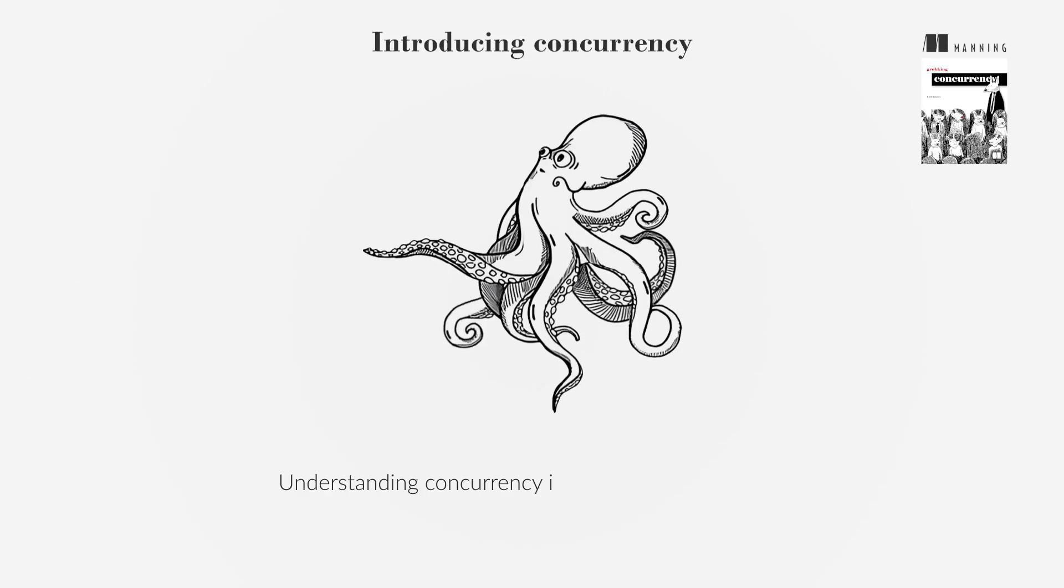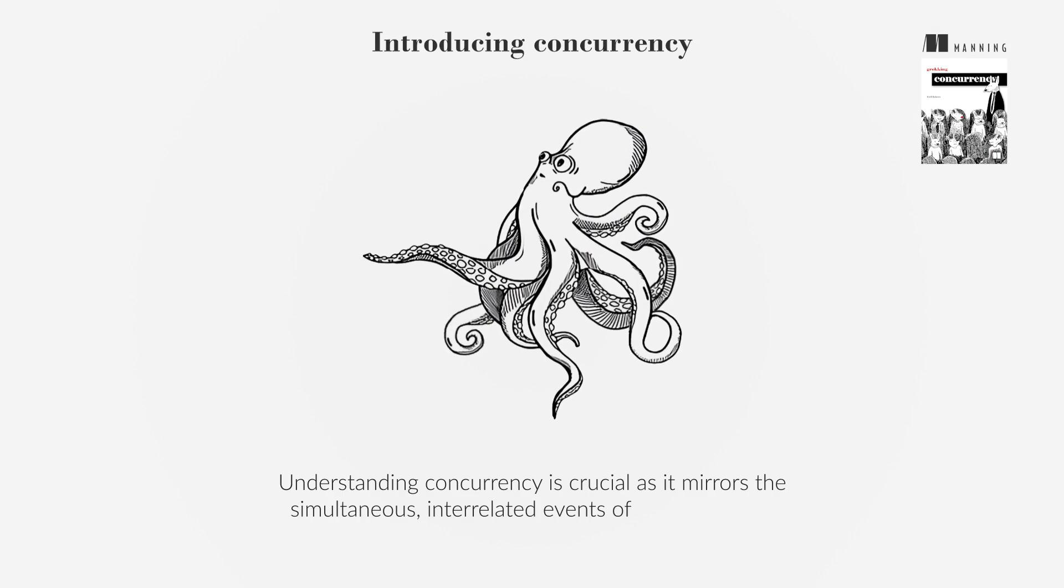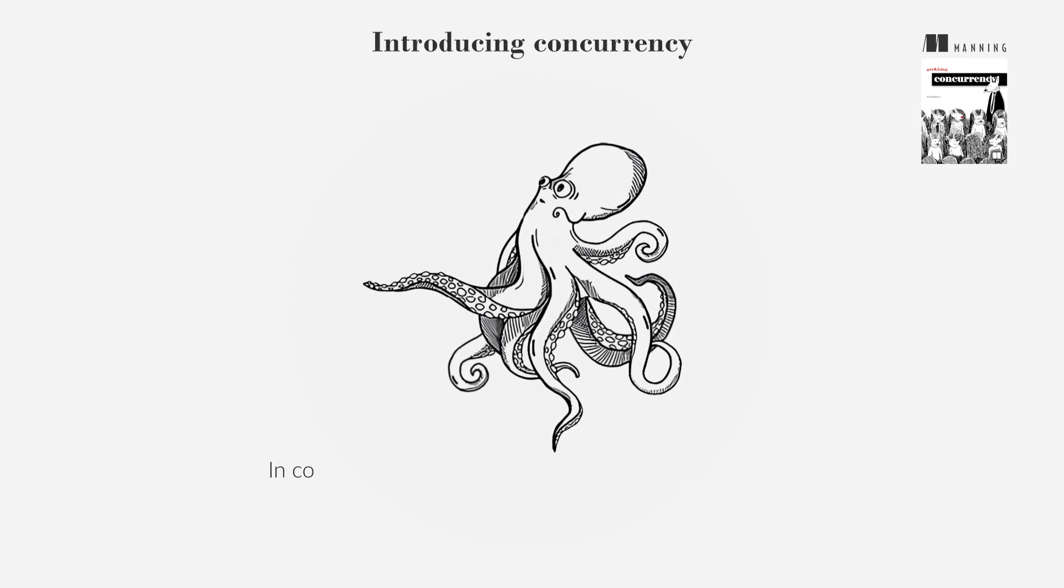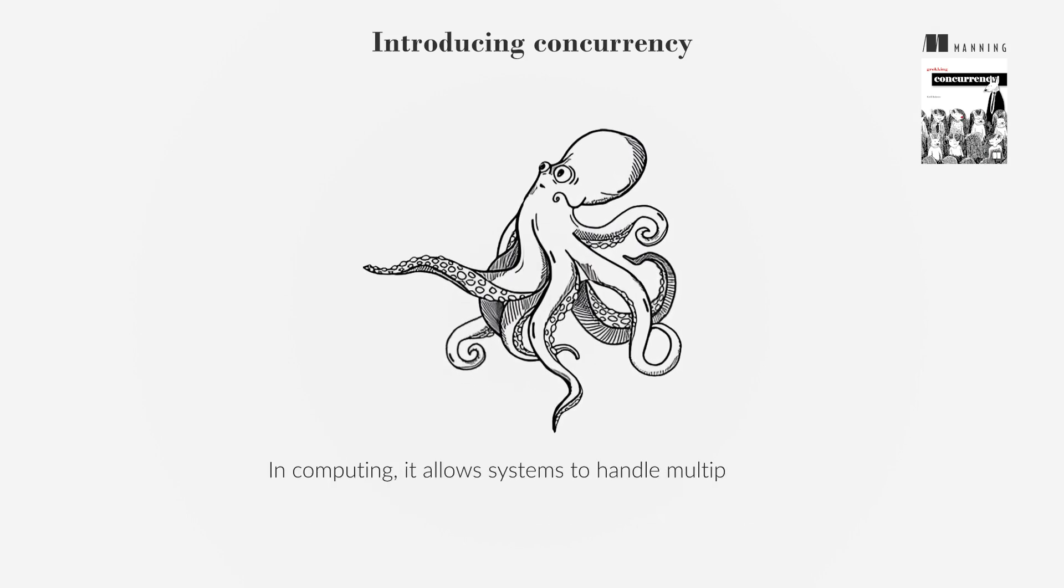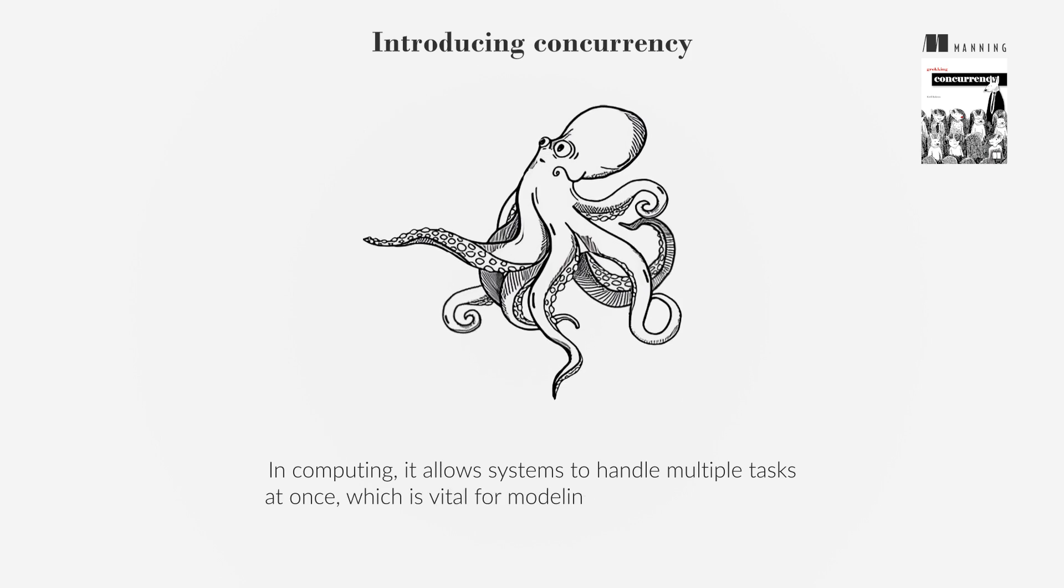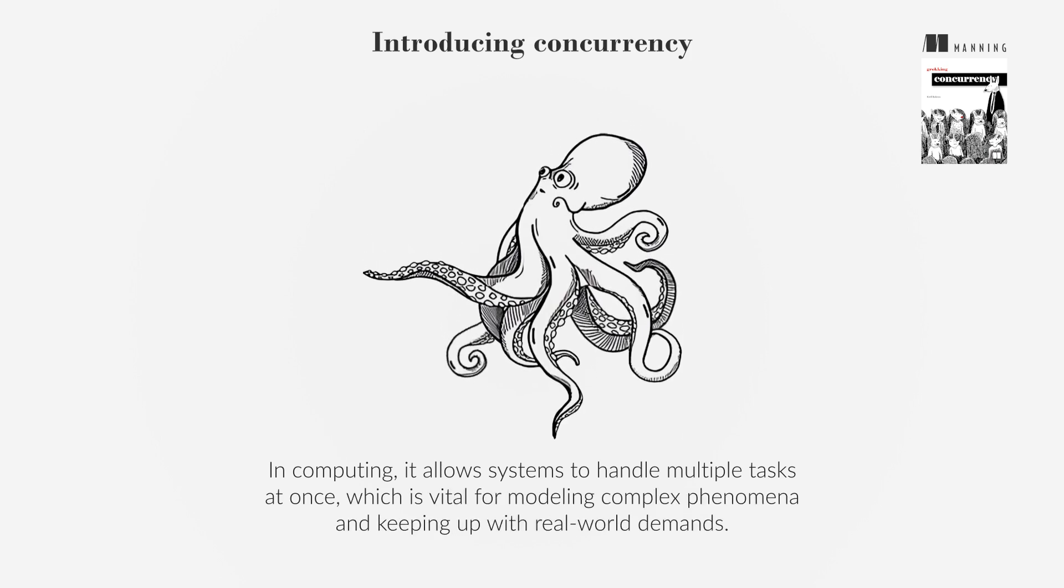Understanding concurrency is crucial as it mirrors the simultaneous, interrelated events of the real world. In computing, it allows systems to handle multiple tasks at once, which is vital for modeling complex phenomena and keeping up with real-world demands.